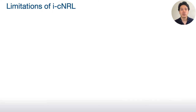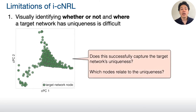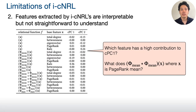Contrastive network representation learning can help identify the target network's uniqueness, but there are several limitations. The first and most critical limitation is that from only contrastive representations, it is difficult to know whether a target network has a uniqueness or not, and which nodes relate to the uniqueness. The second problem is that, even though we have the information to interpret the results, understanding these direct outputs is not straightforward, because there could be many features with complex definitions.